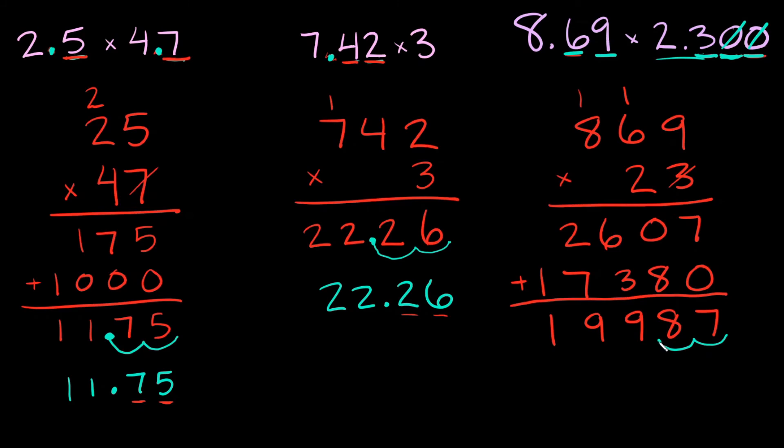1, 2, 3. And that's where your decimal goes. So your answer right here would be 19.987. And just to reiterate this since we have 3 total decimal numbers up here that means we should have 3 total decimal numbers in our answer which we do. So we know we did it correctly. Alright guys so that's how you multiply decimals.